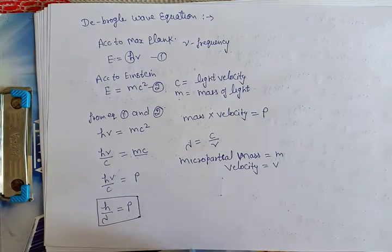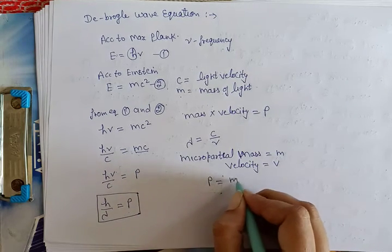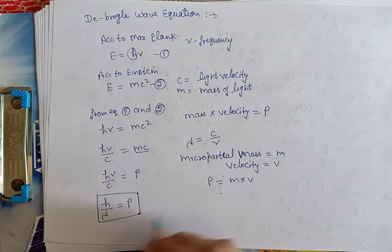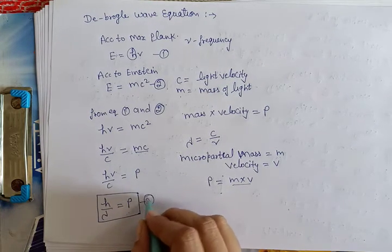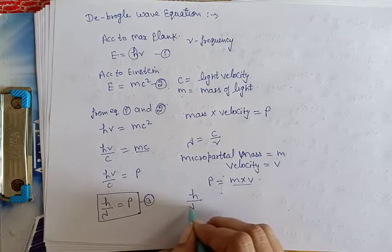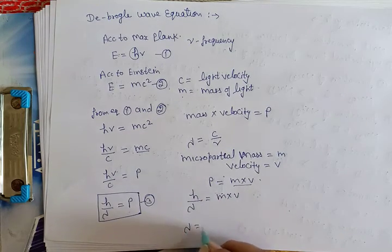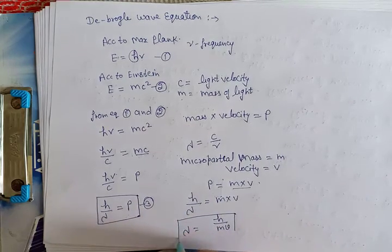تو particle کا momentum p کی value کیا ہوگی m into v - m into v یہ value میں اس equation میں رکھ دوں equation number third میں value رکھ دوں momentum کی تو میرے پاس h upon lambda کی value آگئی m into v۔ lambda کی value کیا آئے گی h upon m v - یہ equation کہلاتی ہے De-Broglie wave equation